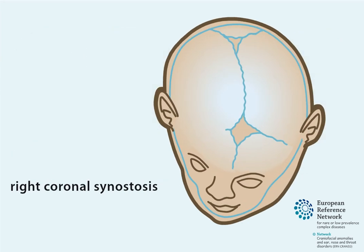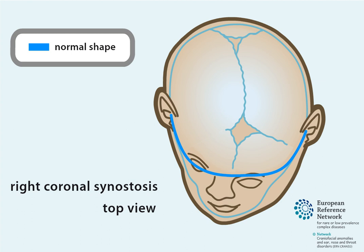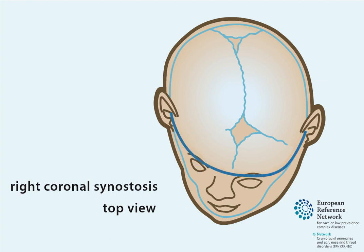Right coronal synostosis. When one of the coronal sutures is prematurely closed, forward growth of the forehead is prohibited on that side. Left coronal synostosis can also occur when the coronal suture on the left side of the head closes prematurely. As a result, the frontal bone is asymmetric, flattening the forehead on the affected side with compensatory bossing on the opposite side.